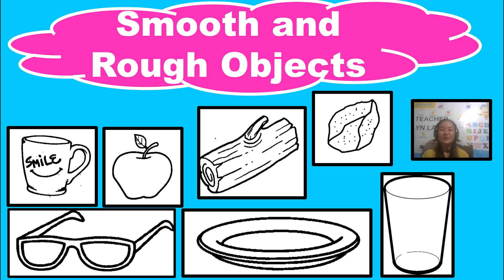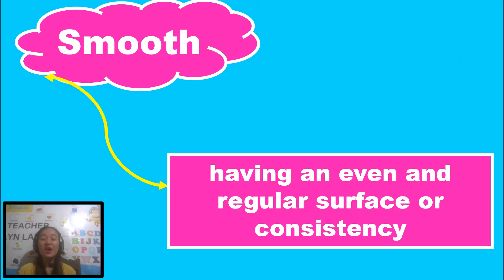Hi! Today, we will be learning about smooth and rough objects. Now, what do we mean by smooth? Smooth means having an even and regular surface or consistency. So that is the meaning of smooth.